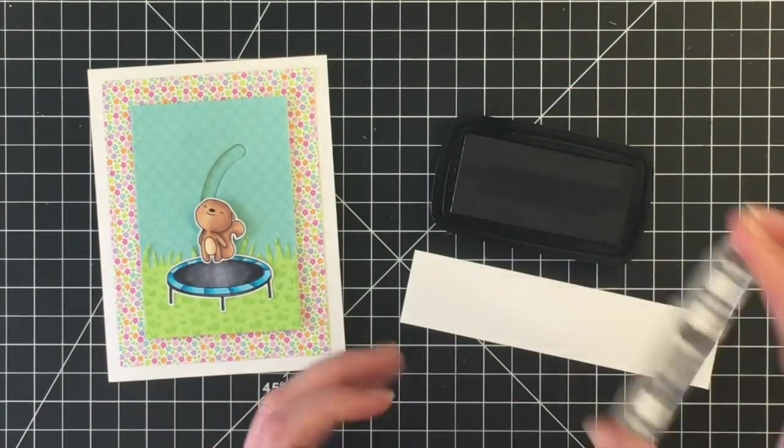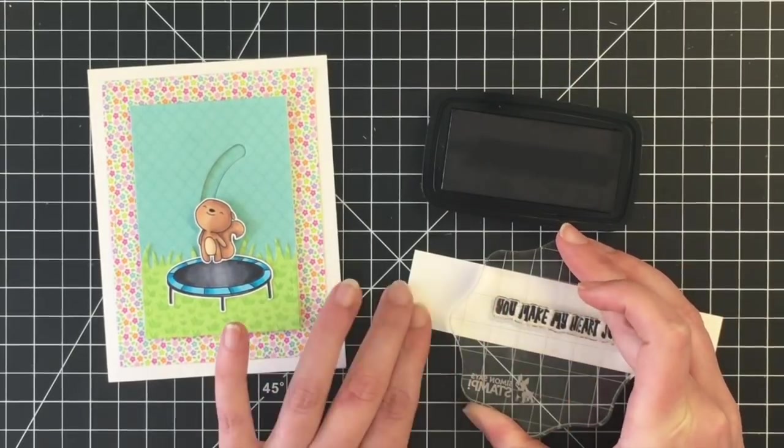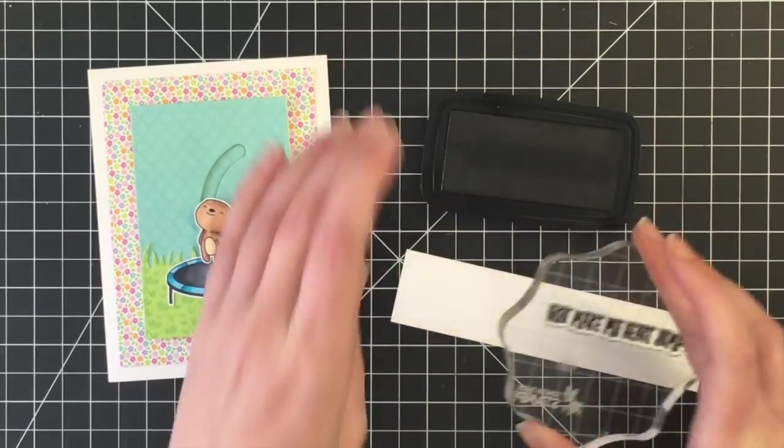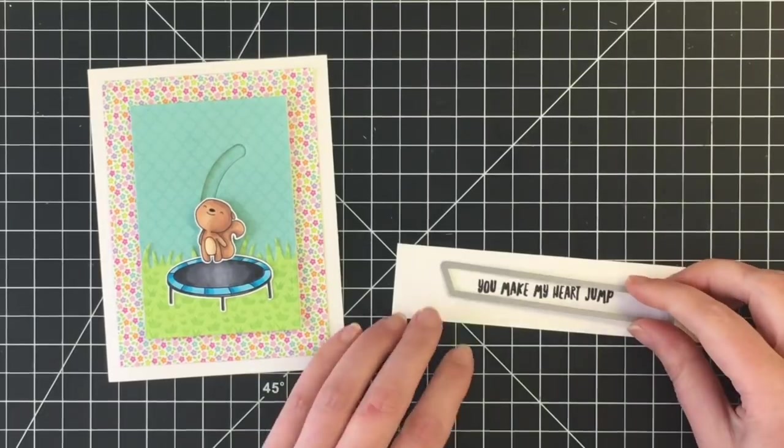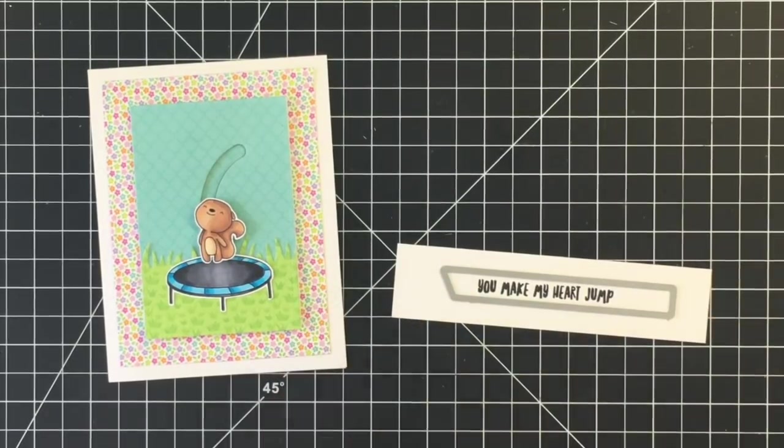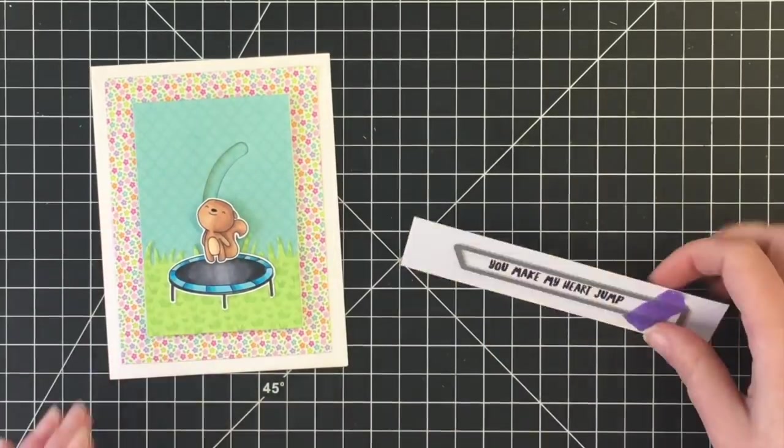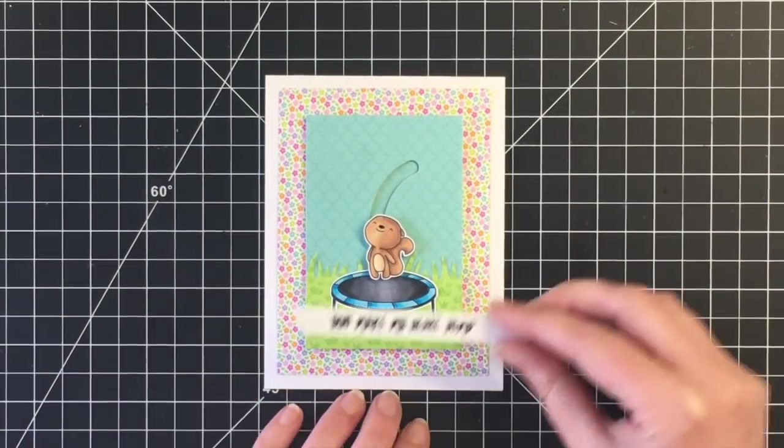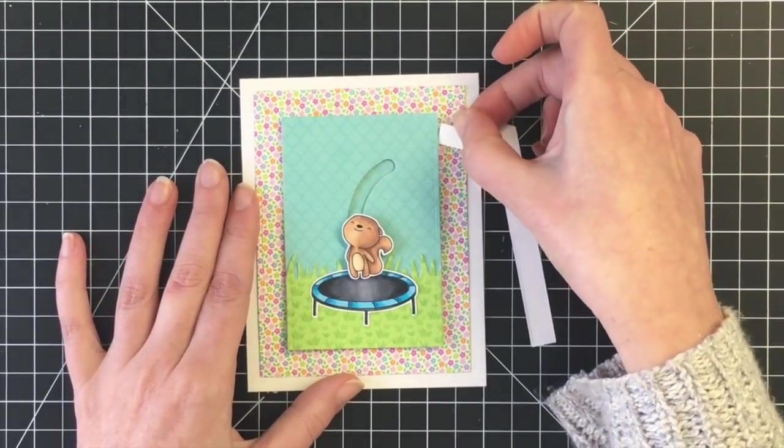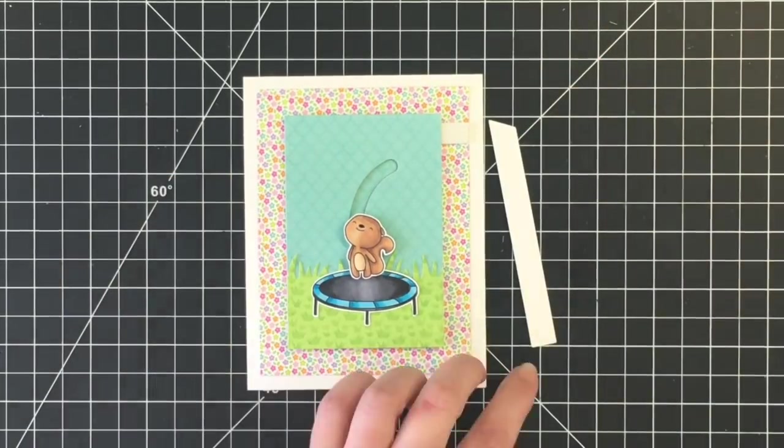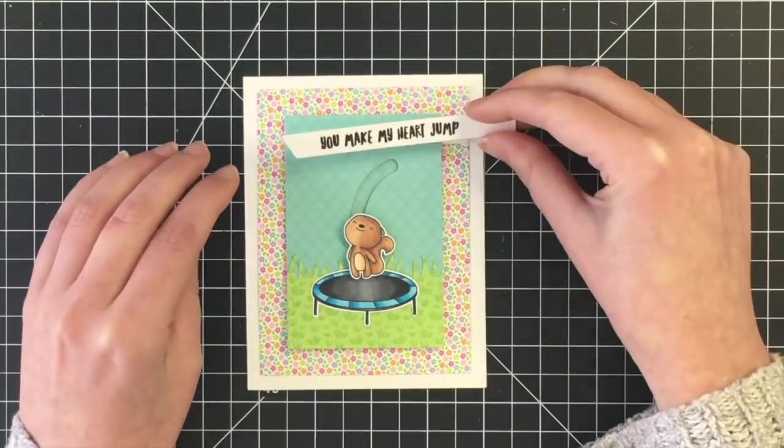At this point I didn't really know where I wanted to stamp my sentiment so I'm using my VersaFine Clair here. Loving this ink. I didn't like the first image that I got with it though on this one so I did re-stamp it and I'm using some MFT Essential Slanted Sentiment Dies here and so I'm trying to figure out where I want this to go. I end up deciding to put it at the top of the card. I did need to add some foam adhesive here just so it would be on the same level.